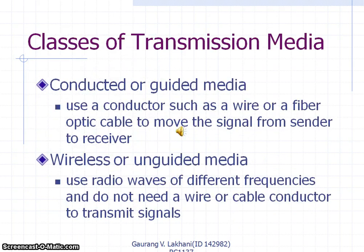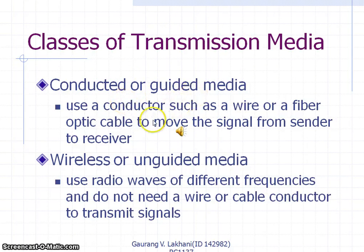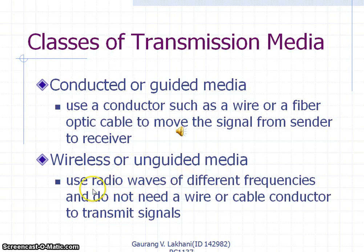Different types of transmission media are available for computer networking. Conducted or guided media use a conductor such as wire or fiber optic cable to move the signal from sender to receiver. In wireless or unguided media, radio waves of different frequencies are used and no wire or cable conductor is needed to transport the signals.